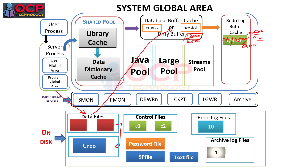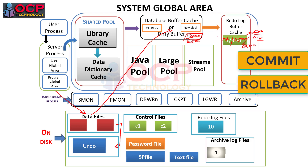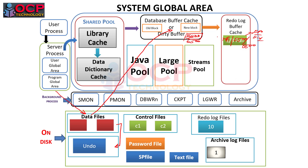At this point, the user has two choices: commit or rollback. If the user performs a rollback, all changes will revert back and nothing will change. If the user performs a commit, the redo log buffer cache will be flushed under three conditions: when it is one-third full, every three seconds, or after a commit.